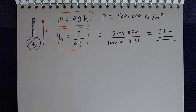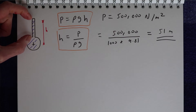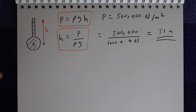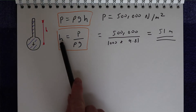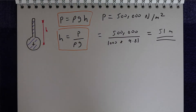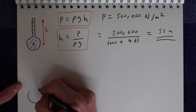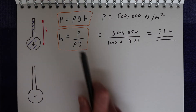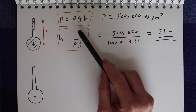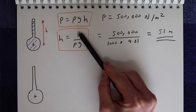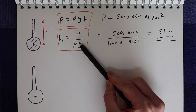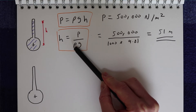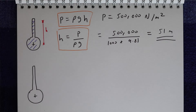Now if you think about a piezometer pipe coming out the top of a water pipe 51 metres into the air, that's quite an impractical height to measure the pressure of water. So what we need to think about is how we can reduce this height H to a practical level. We can't change the pressure P because that's what we're trying to measure, we can't change the value of gravity, but what we can change is the density of the fluid that we're using to measure the pressure.